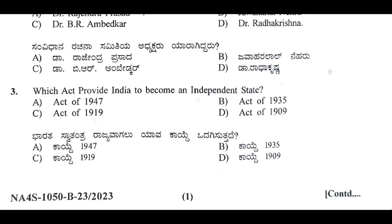The third question: which act provided India to become an independent state? Options are 1947, 1935, 1919, and 1909. The right answer is 1947. The Indian Independence Act 1947 is an act of the Parliament of the United Kingdom that partitioned British India into the two new independent dominions of India and Pakistan.